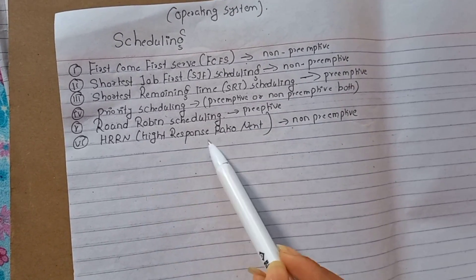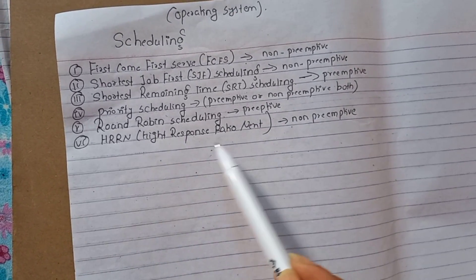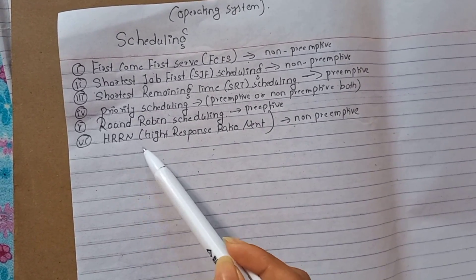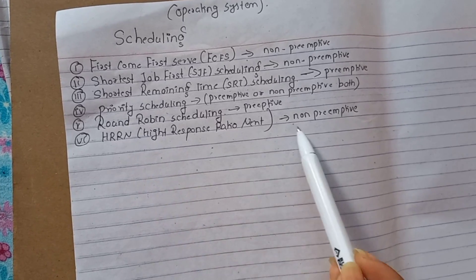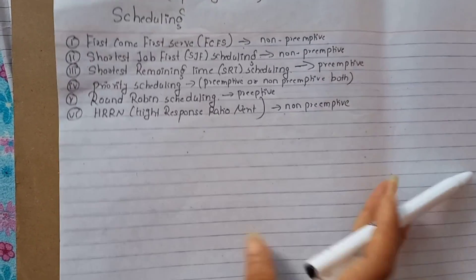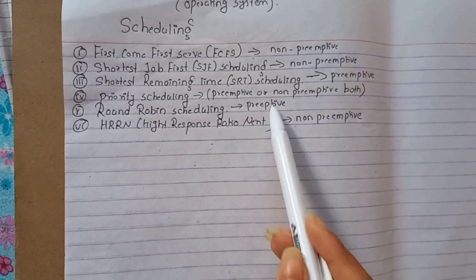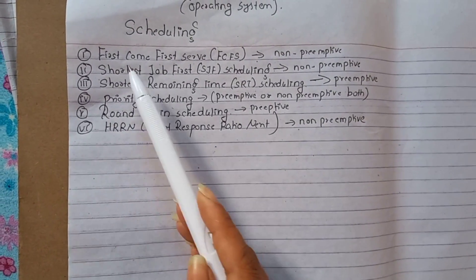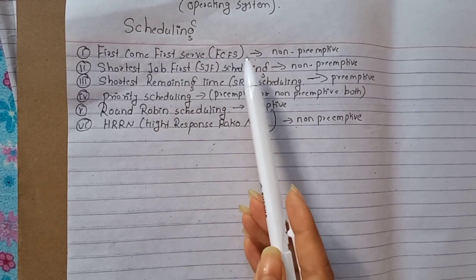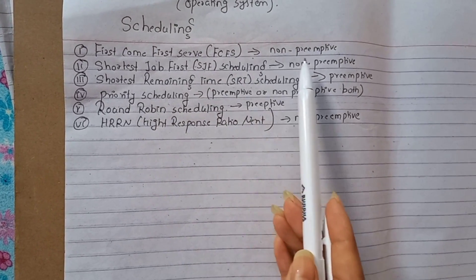Last, Highest Response Ratio Next, that is HRRN, and it is non-preemptive. This is an easy method. For First Come First Serve, it is non-preemptive.